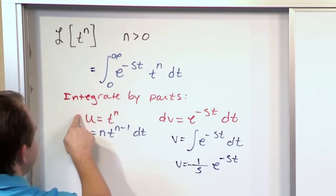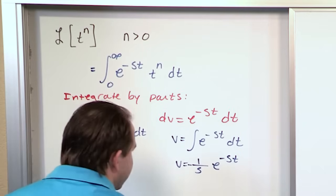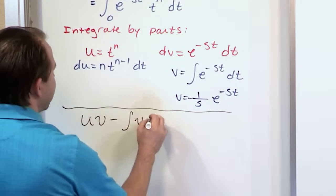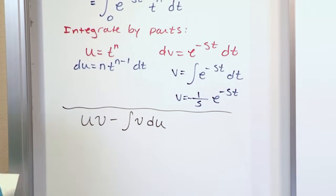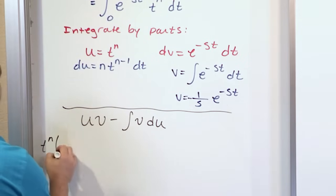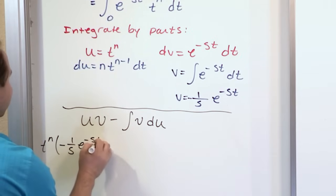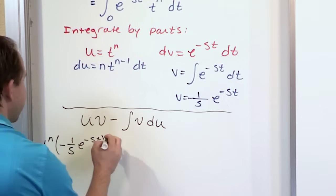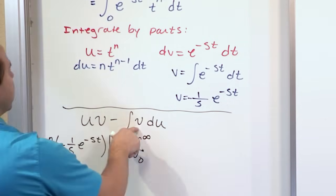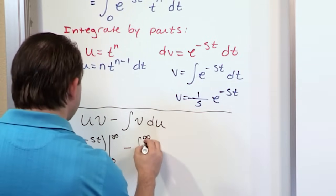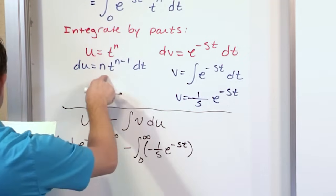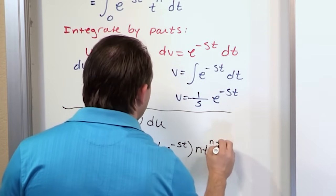Integration by parts is u times v minus the integral of v times du. We just have to plug it in and crunch through it. It's going to be a little ugly. So u is t to the power of n, v is negative 1 over s times e to the minus st — that's u times v evaluated from 0 to infinity. Then we subtract the integral from 0 to infinity of v, which is negative 1 over s times e to the minus st, times du, which is n times t to the n minus 1 dt.